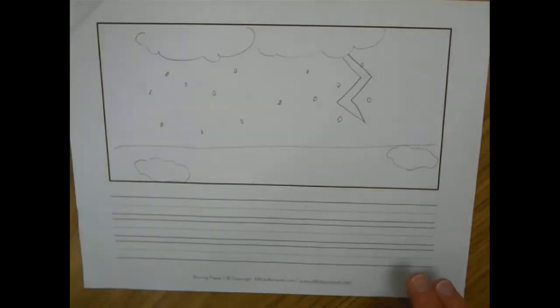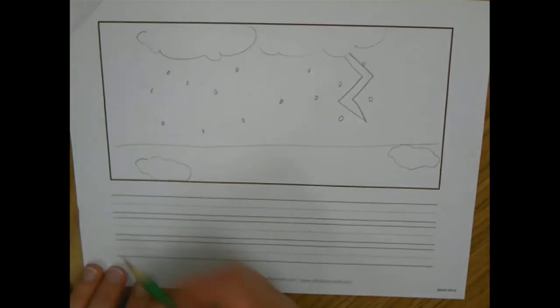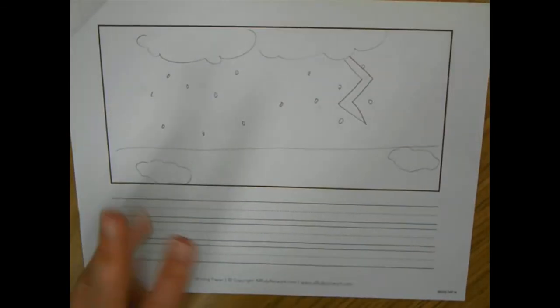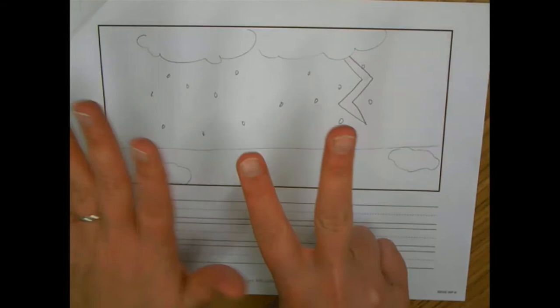This page, I was going to talk about how sometimes it rains. So I think I'm going to say some days the weather can be rainy. Some days the weather can be rainy. Oh, that's seven words again.